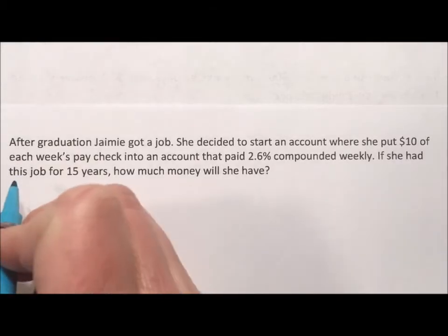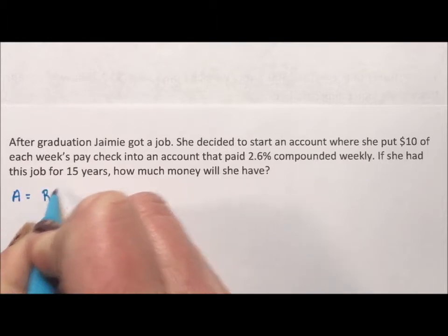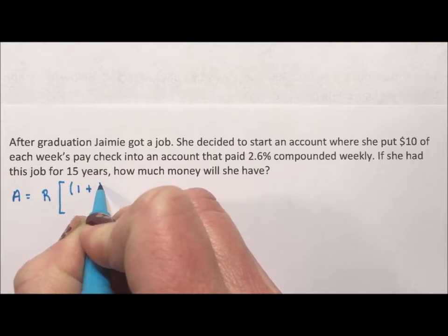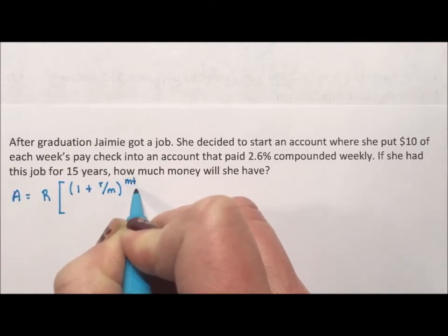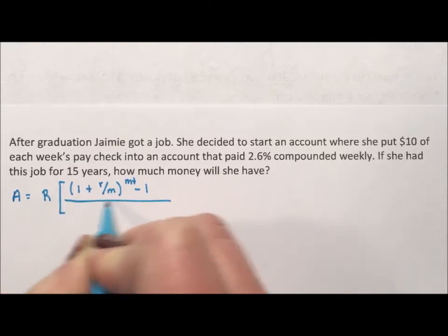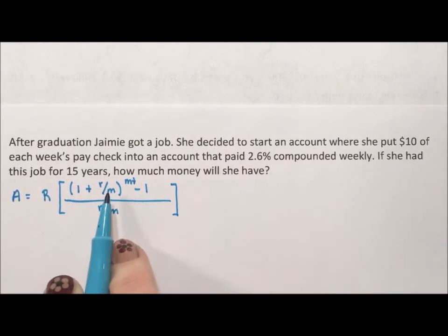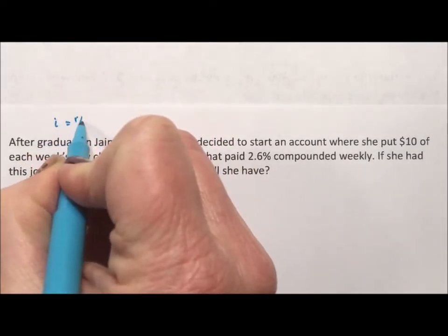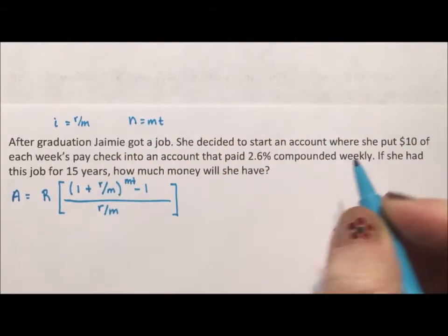The form of the equation I'm going to use is A equals R times (1 plus r over m) to the mt minus 1, divided by r over m. In some of my previous videos, I used i for r over m and N for mt, and you can do that.